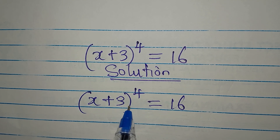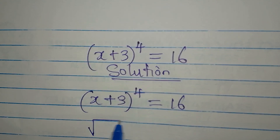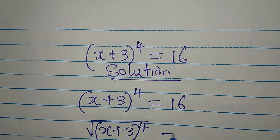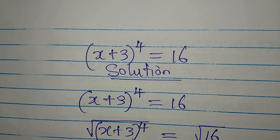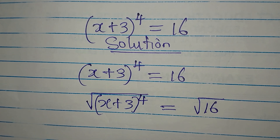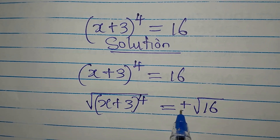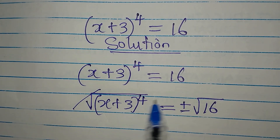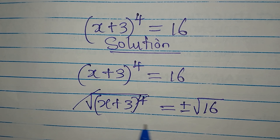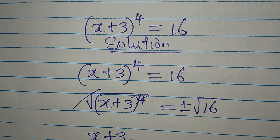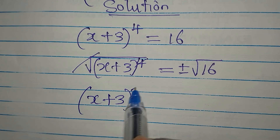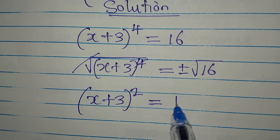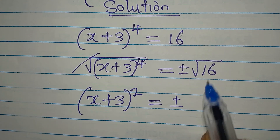Now, what do I do from here? I want to take the square root of both sides. (x + 3) to the power of 4 is on the left, then on the right hand side we are going to have the square root of 16. Every time you take the square root of both sides, on the right you should have a positive or negative value. This square root will go in two times, so we'll have (x + 3) to the power of 2 on the left hand side, and this will be equal to positive or negative square root of 16, which gives us 4.